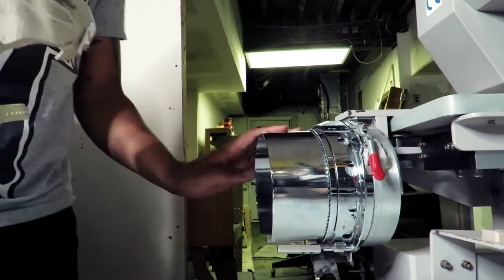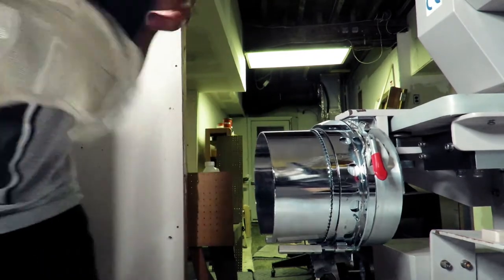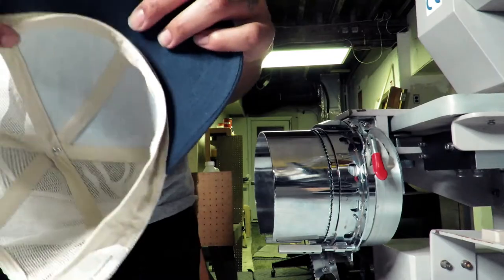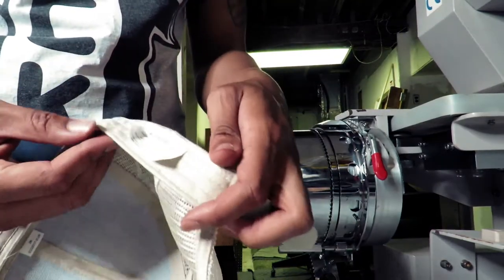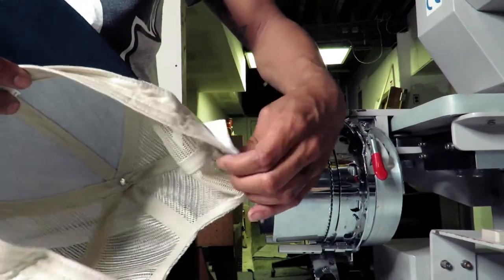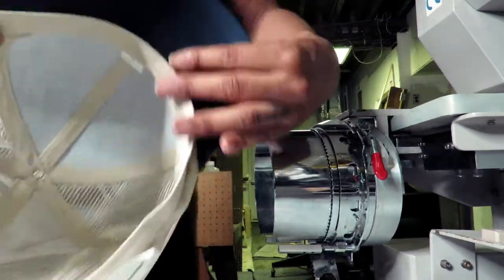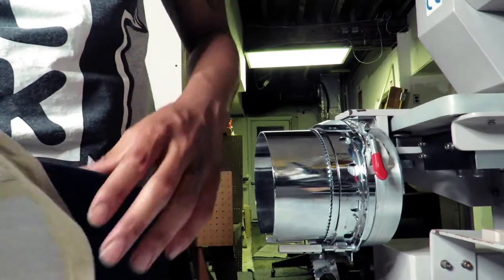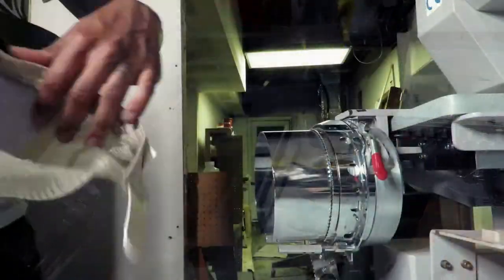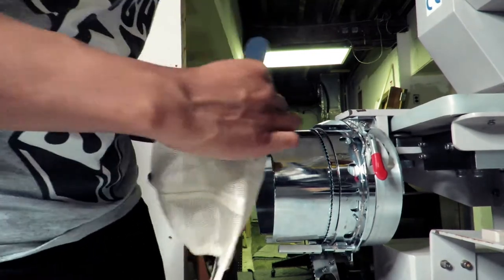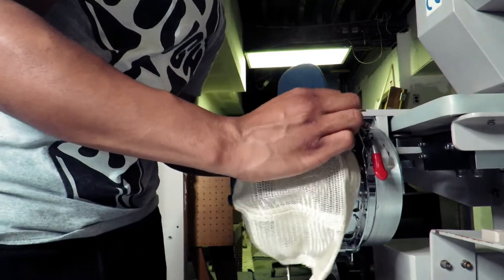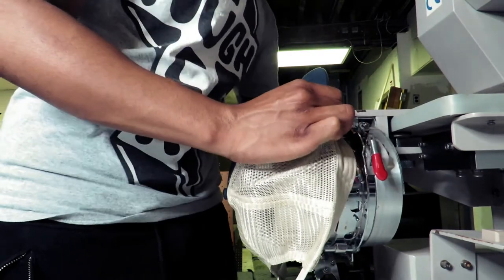Next step after you have your backing on if you are using backing you want to take your hat and make sure your sweatband on the inside of the hat is turned up and away from the inside of the hat like so. After you have that turned up and out of the way just take that sweatband and slide it underneath that same metal lip that the backing went underneath.